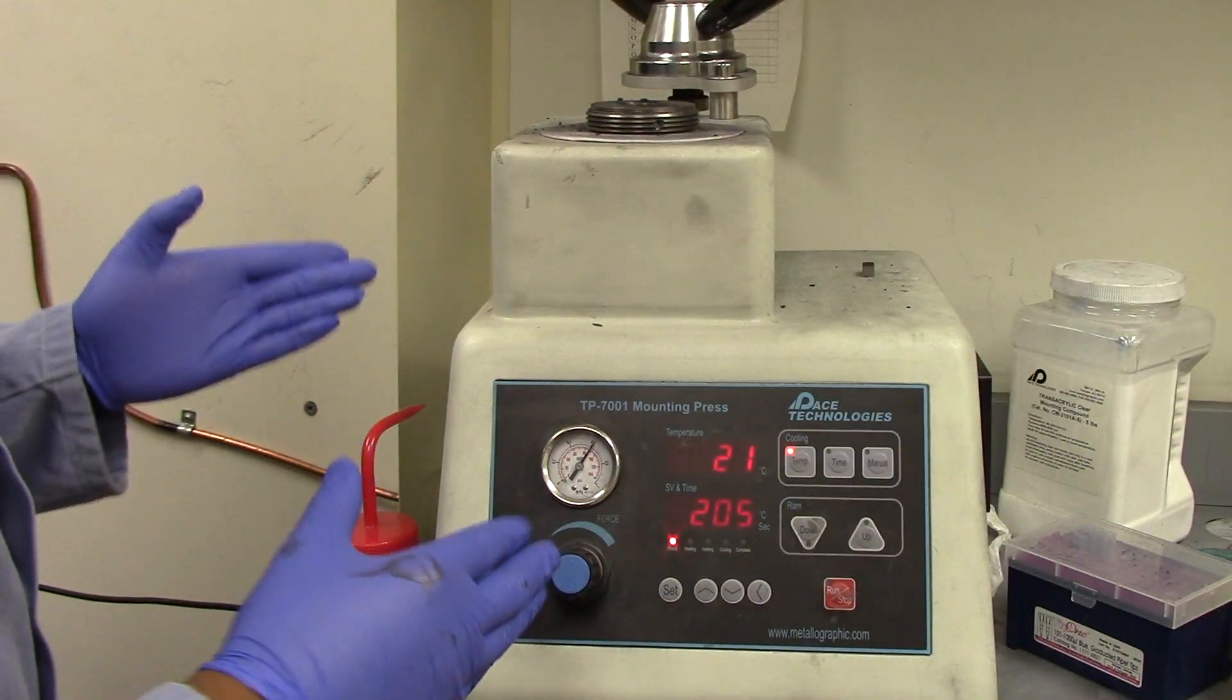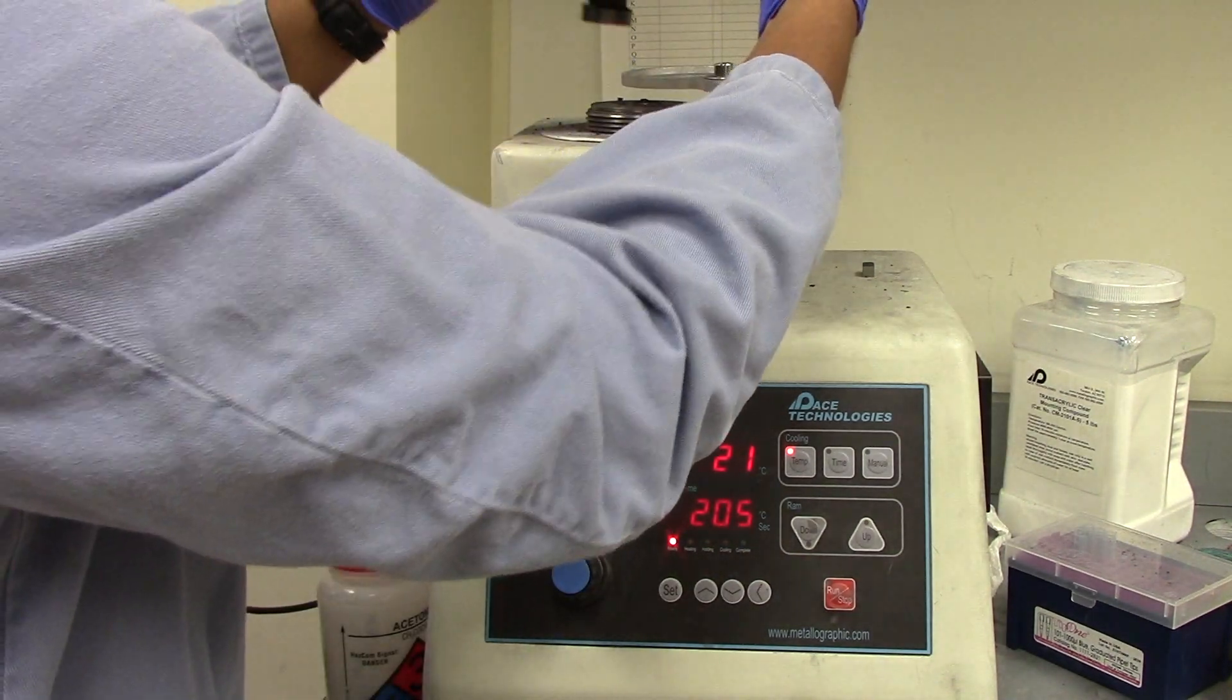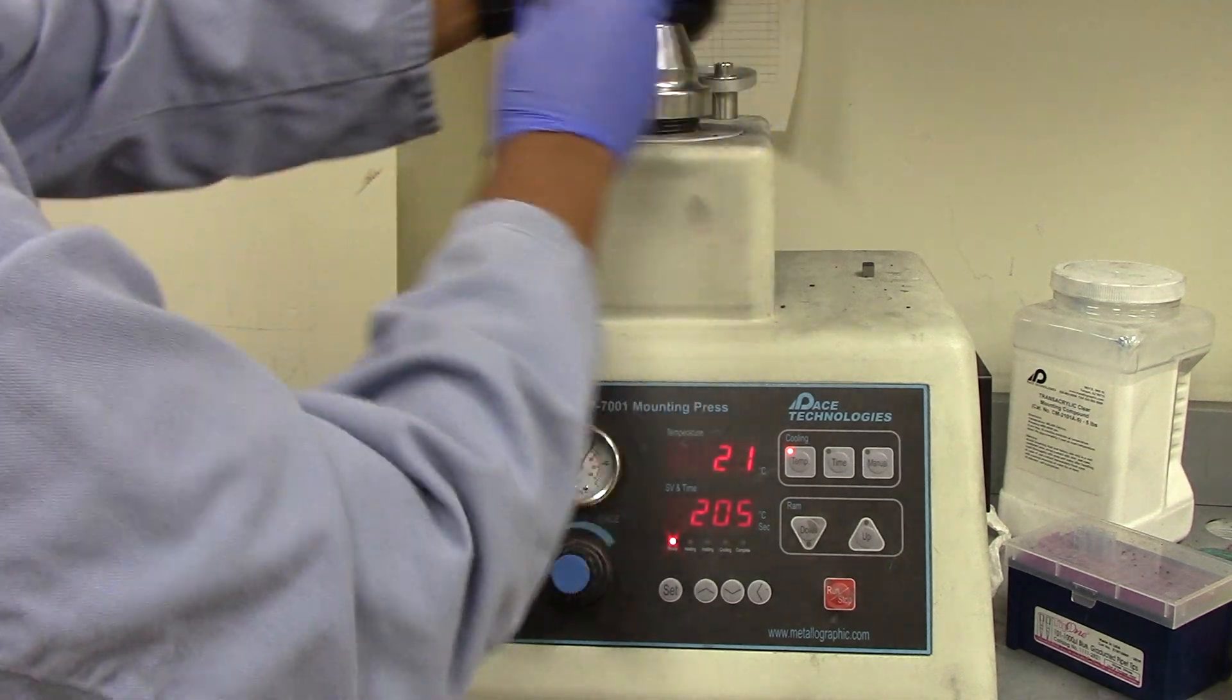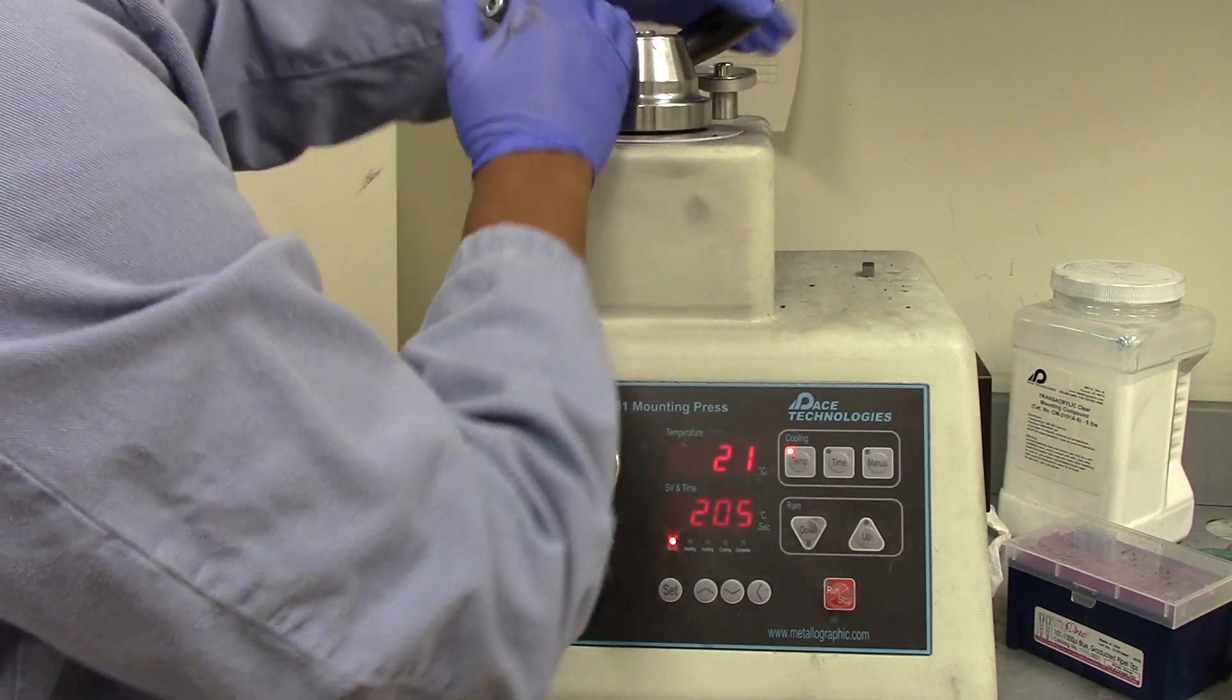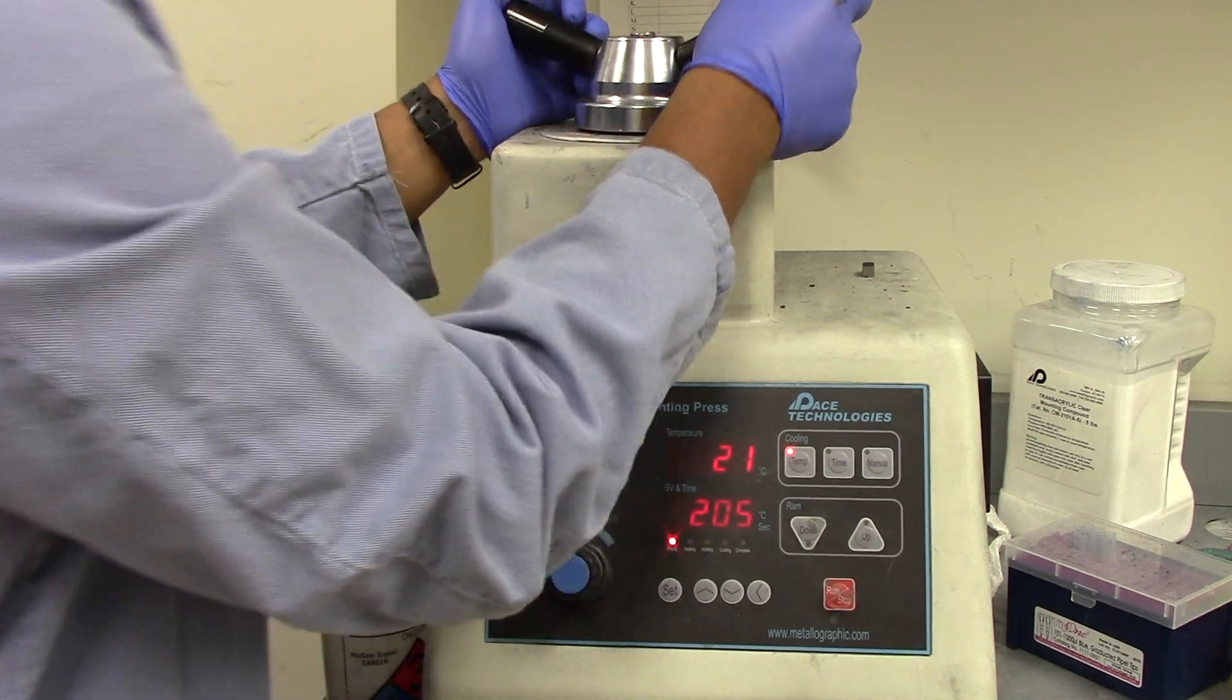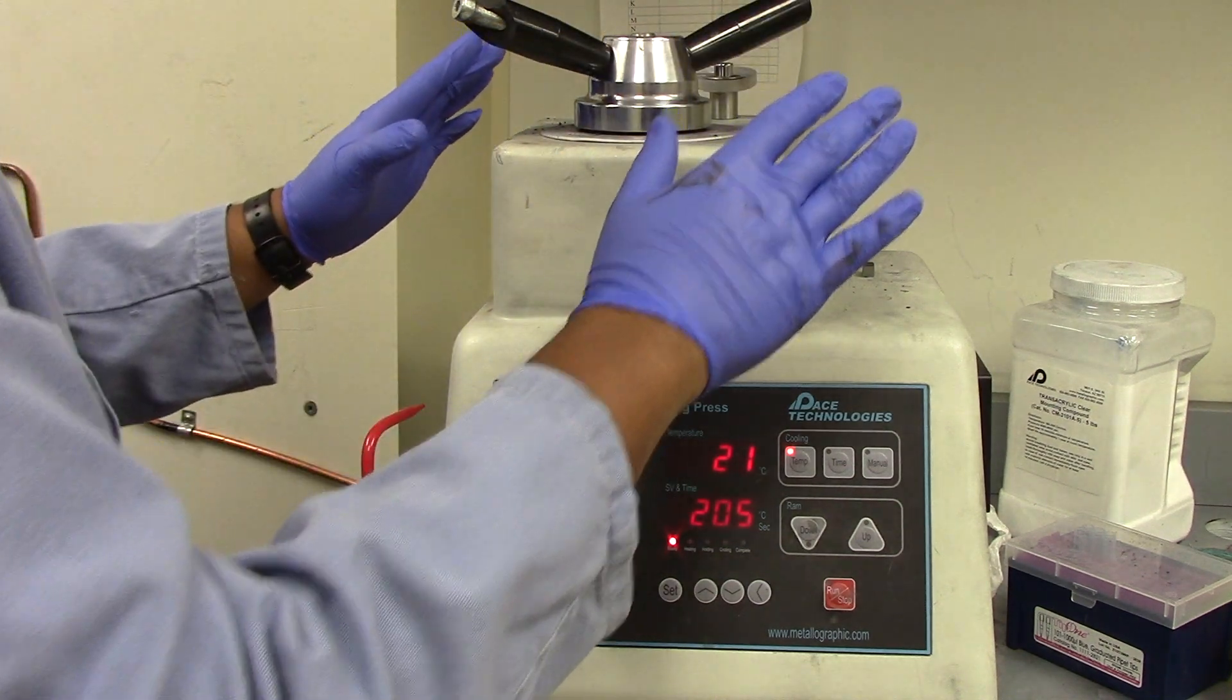Now that I have my sample and my mounting powder in here, I'm just going to take the top off and then completely rotate this. Bring it over here, get it nice and tight, and then just loosen it just half a turn.